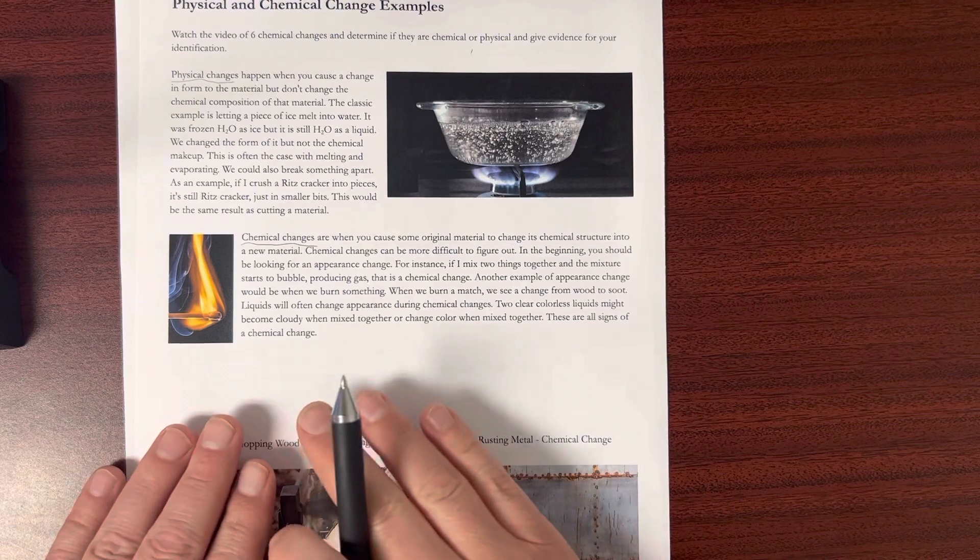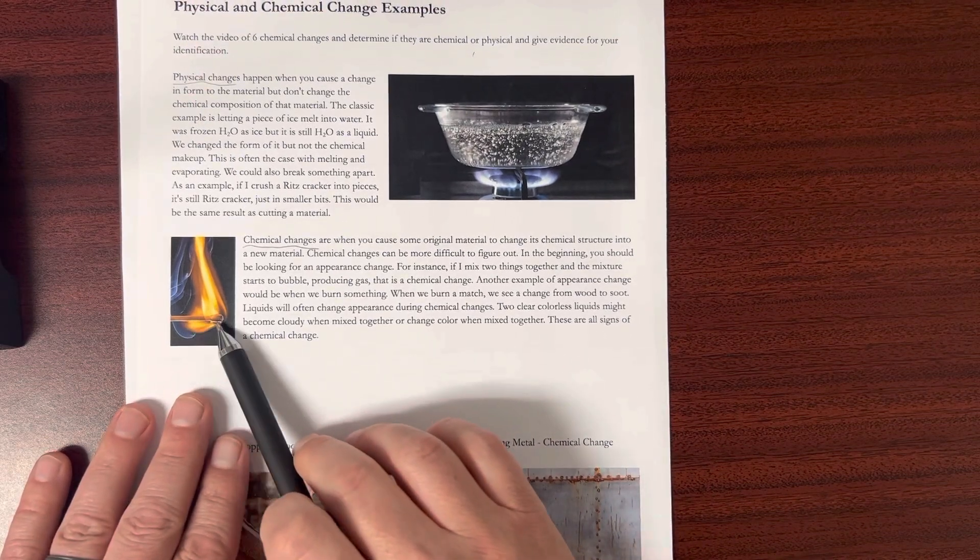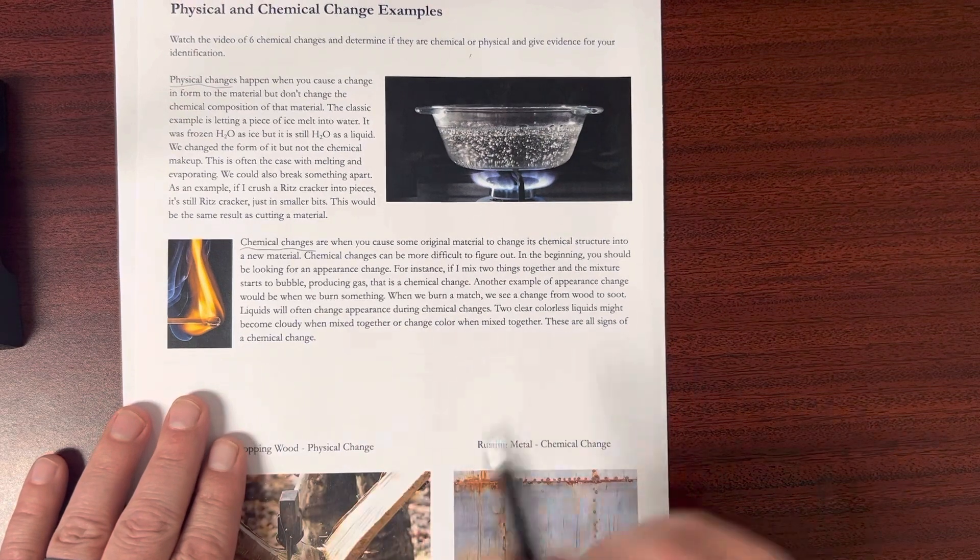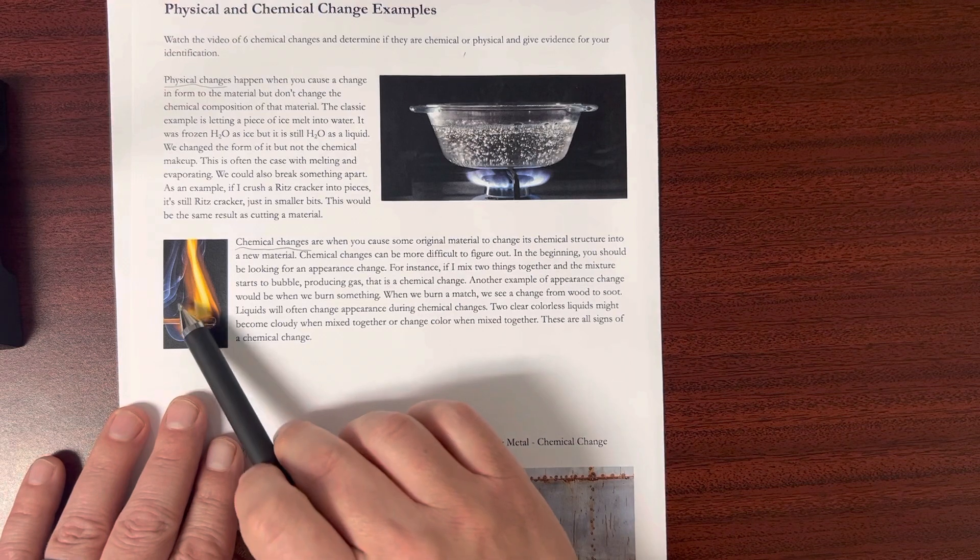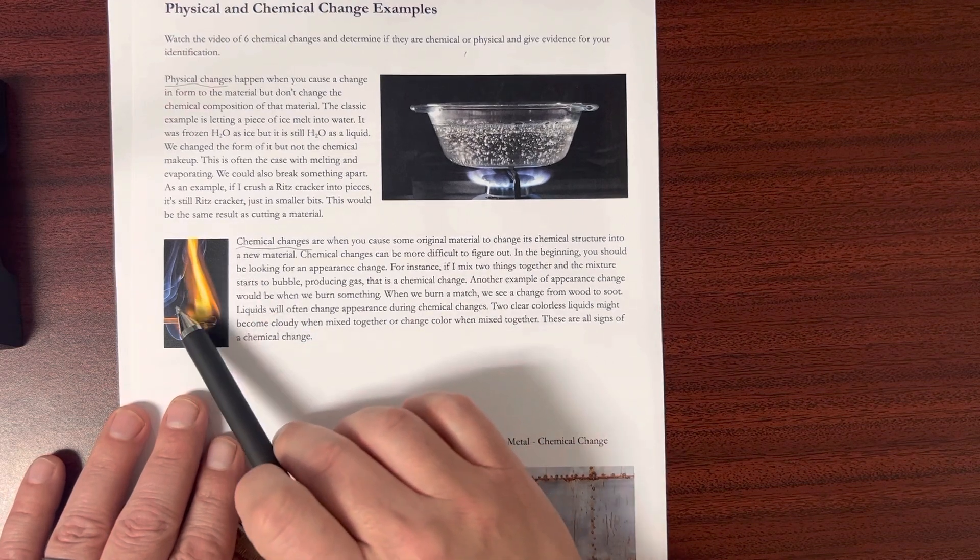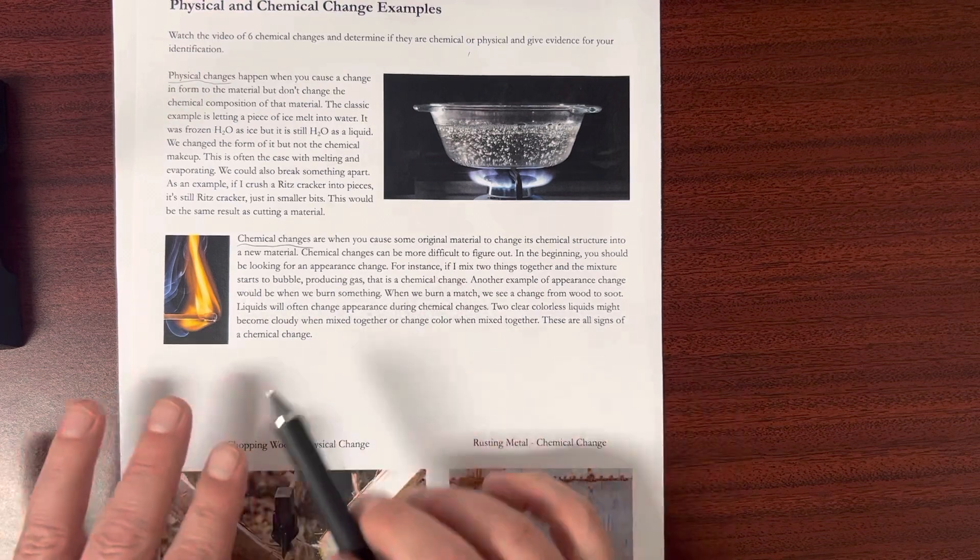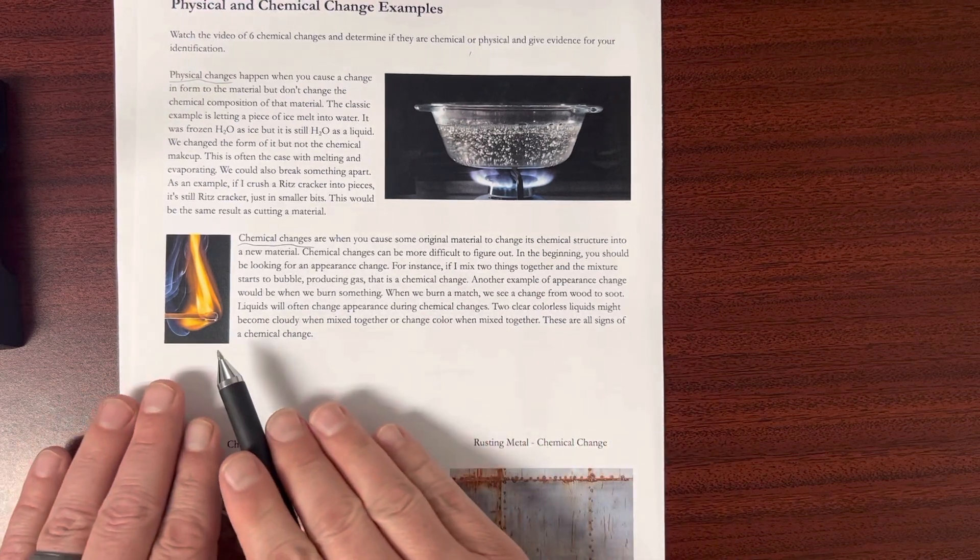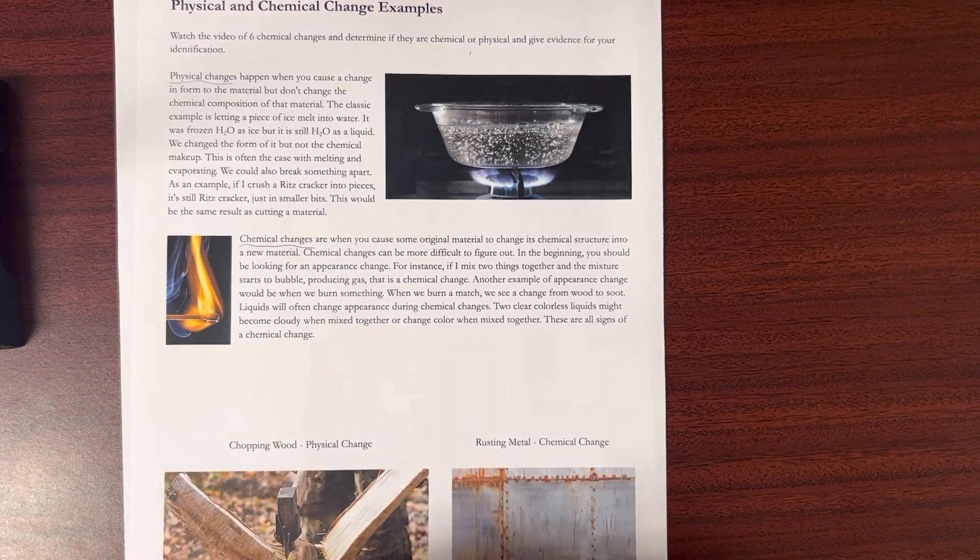And combustion or burning is a good example of this. If I take this match and I burn it, well now I've converted some of that wood material, that cellulose, into soot, which might just be pure carbon. So it's actually gone through a chemical change. The stuff that I started is chemically different from what I've ended with.